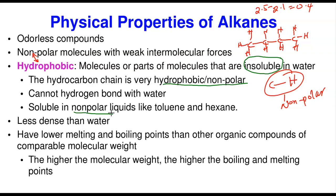Remember the concept of dissolution: like dissolves like — polar molecules dissolve polar molecules, non-polar molecules dissolve non-polar molecules. So hydrocarbons, because they are non-polar, are only soluble in non-polar liquids. A good example of non-polar liquids are toluene and hexane, because hexane itself is a C6 hydrocarbon — it is also a non-polar molecule that will dissolve other alkanes.